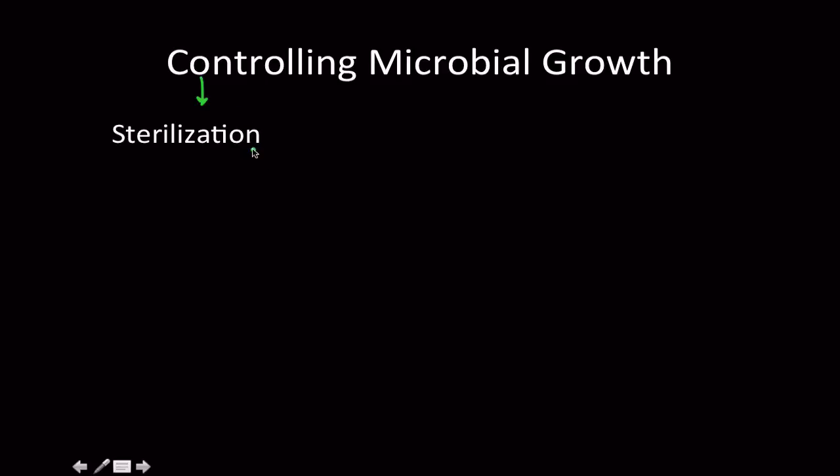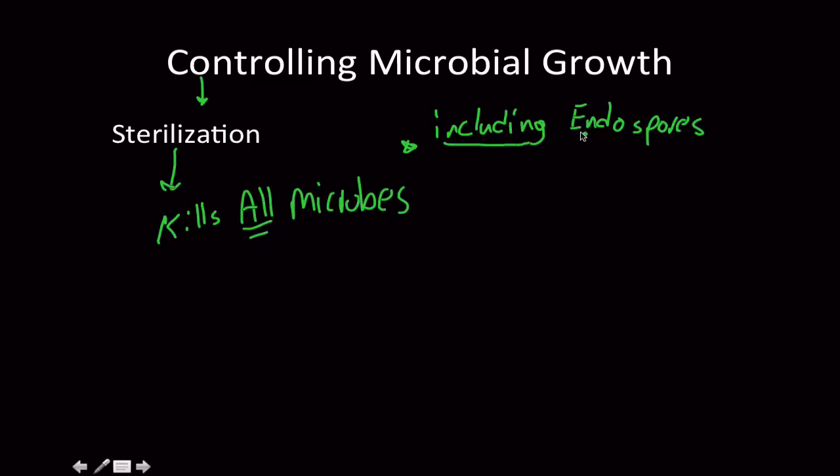So sterilization is something that is going to kill all forms of microbial life. Kills all microbes. And this includes endospores. Because if you're ever curious, the reason why we invented the autoclave, which is just an industrial grade pressure cooker, is because endospores can survive in such extremes. So it kills all microbes. There is no viable cells remaining. If something is viable, this just means that it can reproduce.